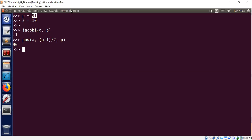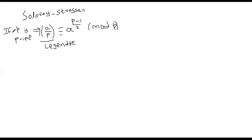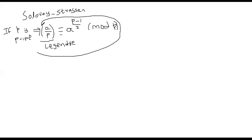That's the converse of the statement. If P is prime then the property is true, but if the property is true it doesn't necessarily imply P is prime. However, if the property is violated — that is, A^((P−1)/2) is not the same as the Jacobi symbol — then we can conclude that P is not prime.